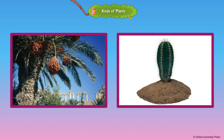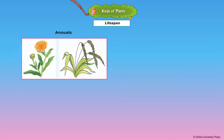The roots of desert plants grow deep into the soil in search of water. The stems can store a lot of water. Life span: annuals. An annual plant is one that grows and dies in one year.